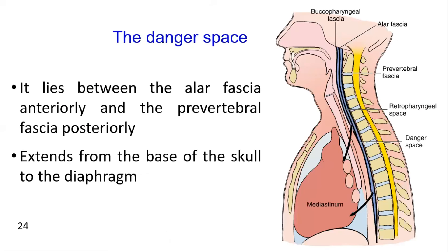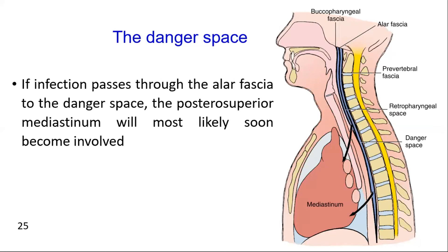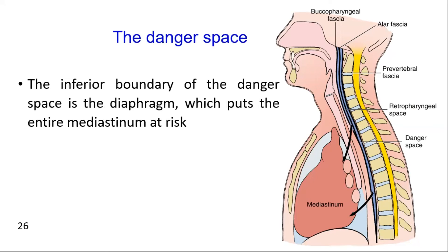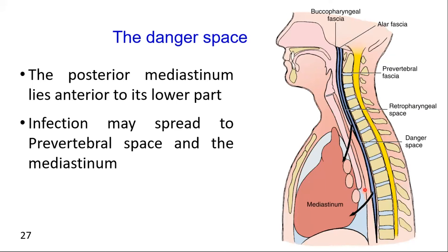The danger space lies between the alar fascia anteriorly and the pre-vertebral fascia posteriorly, and extends from the base of the skull to the diaphragm. Infections from the retropharyngeal space can rupture the alar fascia posteriorly, allowing infection to spread caudally and posteriorly into the danger space. The borders of the danger space are the alar fascia anteriorly and pre-vertebral fascia posteriorly, with the skull superiorly and the diaphragm inferiorly. The posterior mediastinum lies anterior to its lower part.